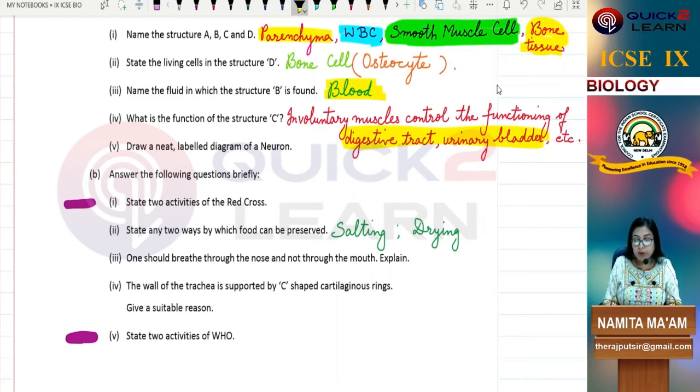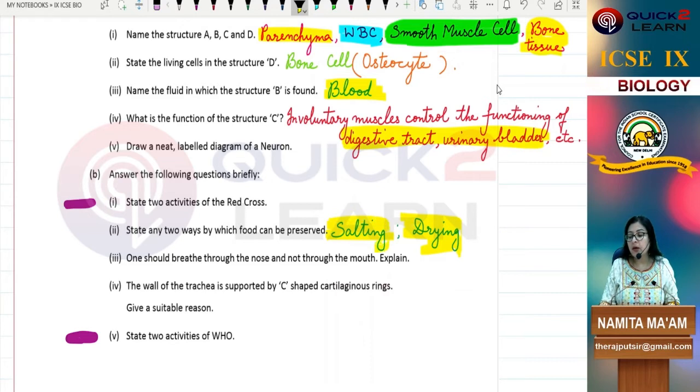State any two ways by which food can be preserved. There are many methods, so you can mention two of them. I have taken salting and drying. You can use many chemicals for preservation, excess sugar like in jams, pasteurization, boiling, and there are many processes.